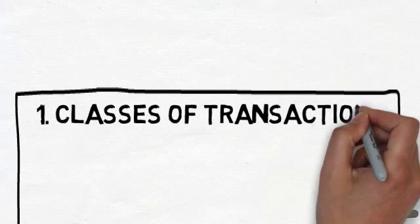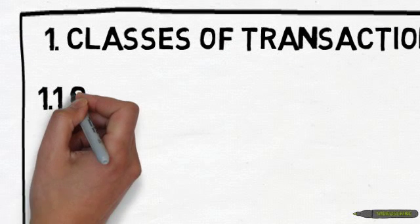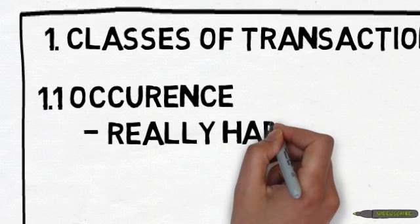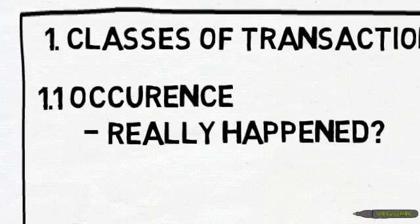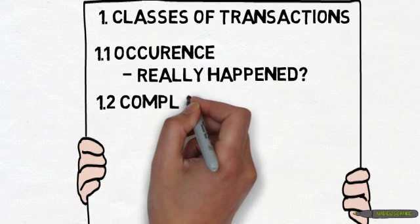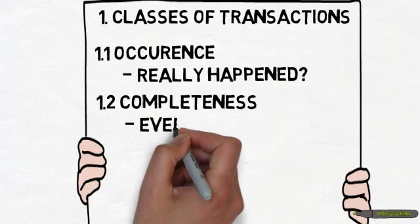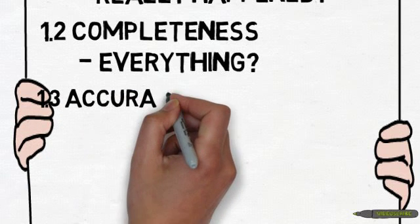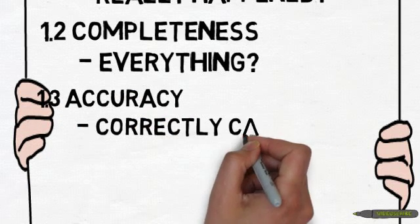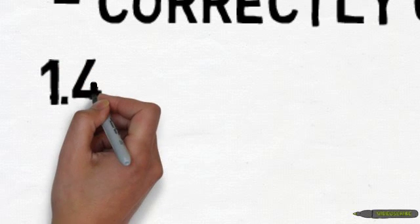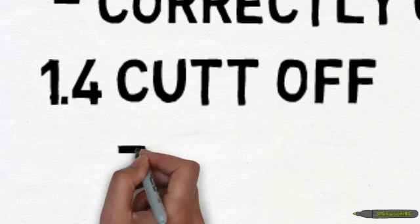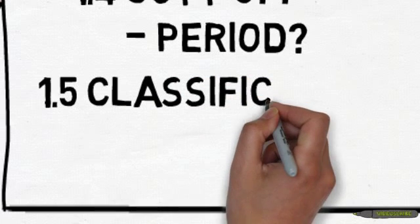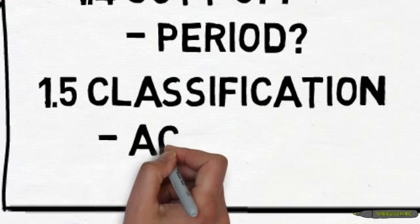Firstly, assertions about classes of transactions and events. This typically impacts your statement of comprehensive income or income statement. First assertion: occurrence, meaning transactions and events so recorded in the financial statements actually occurred and relates to the same period. Completeness: all such transactions and events that require recording have been recorded. Accuracy: transactions and information have been recorded with accurate amounts. Cutoff: only those transactions and events that have been recorded pertain to the accounting period under consideration. Classification: transactions and events have been recorded in the related accounts properly.